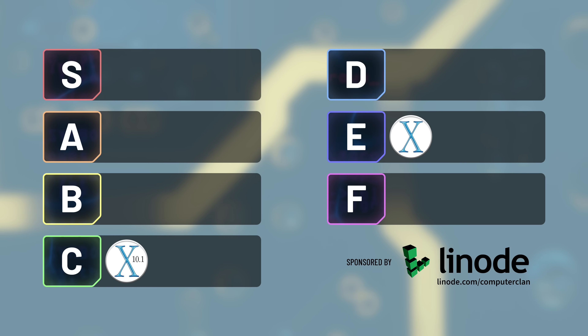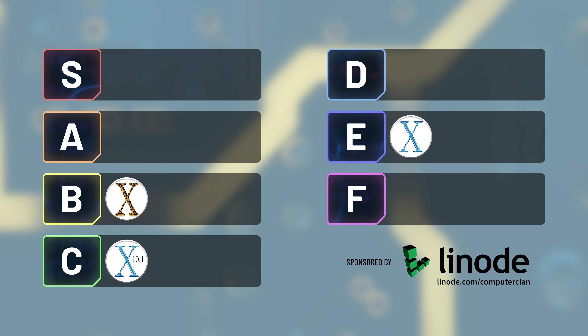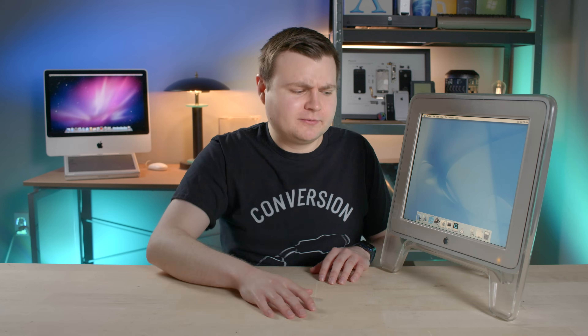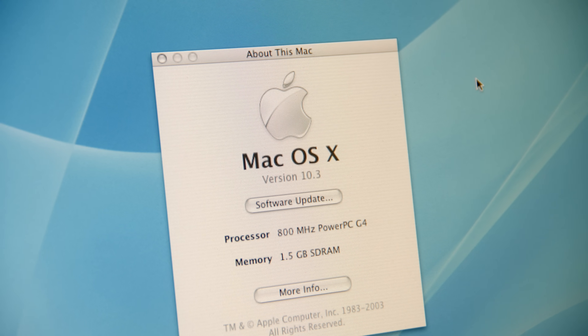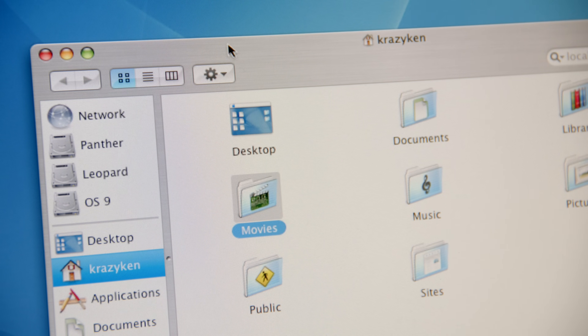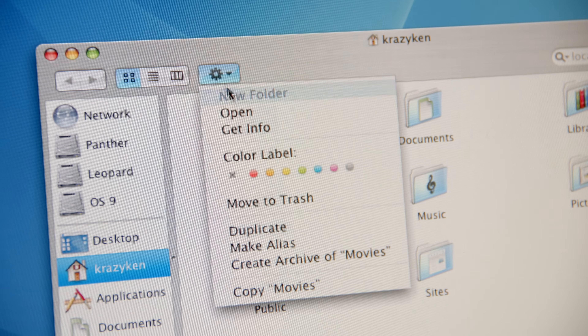Because of the cat puns in the marketing — I'm afraid I'm going to have to give Jaguar an F. Okay, I'll give it a B. I was just kidding. We need to move on to Panther before I make another catastrophic pun. Panther introduced a redesigned Finder with a sidebar and action menu, plus fast user switching with that sexy cube animation.